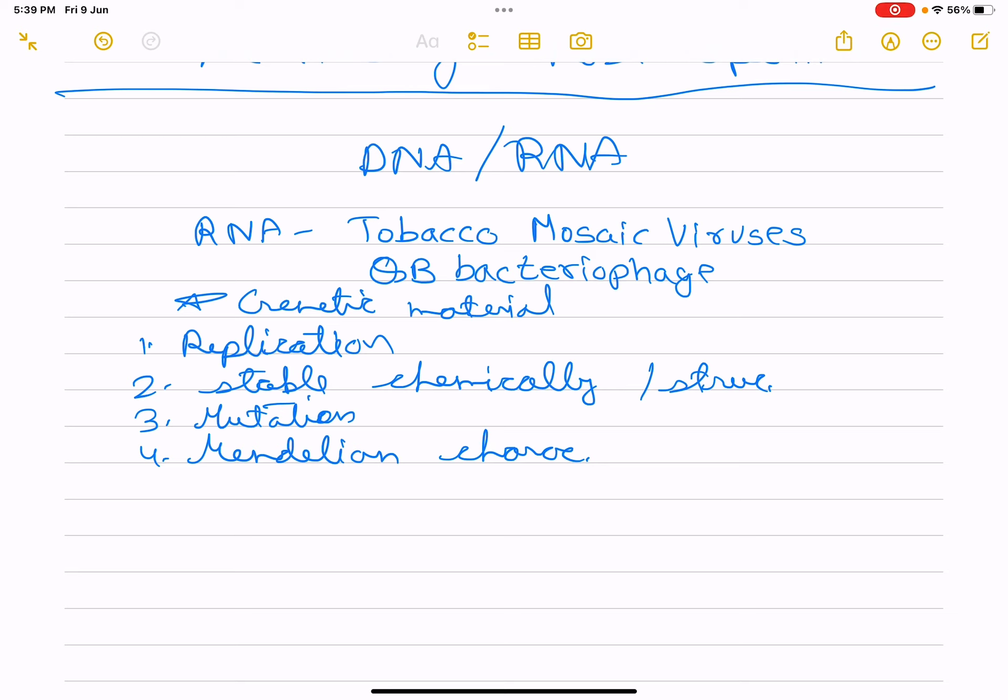Any genetic material must fulfill these characteristics. Nucleic acids are needed to direct their own duplication. Genetic material must be stable and should not change at different stages of the life cycle. Protein fails the stability criterion — stability is the most important property of genetic material, as seen even in Griffith's transforming principle.